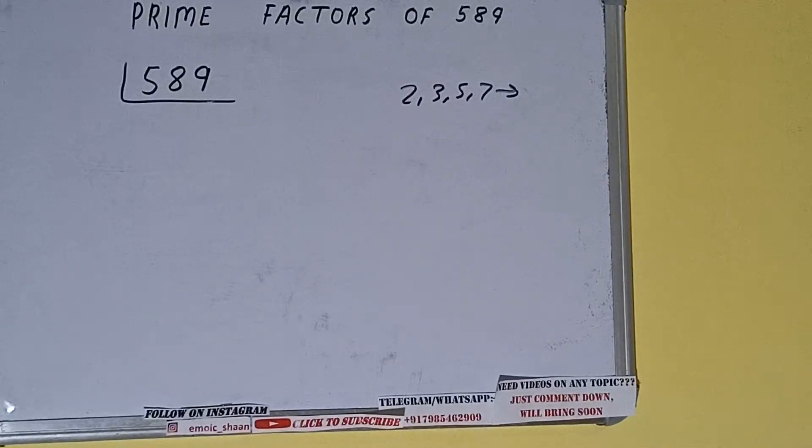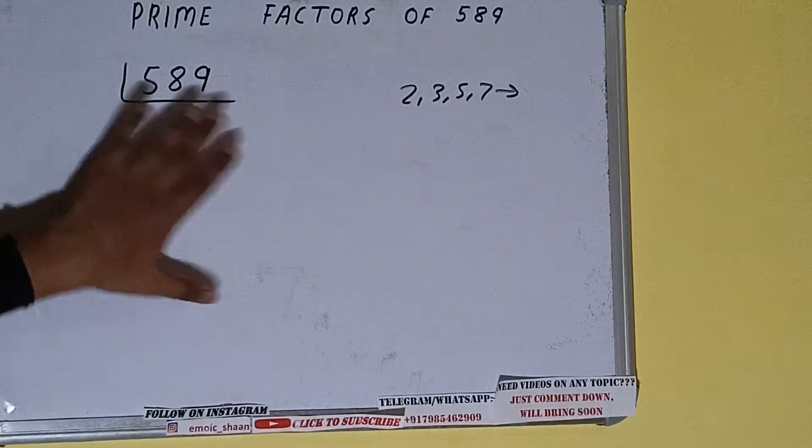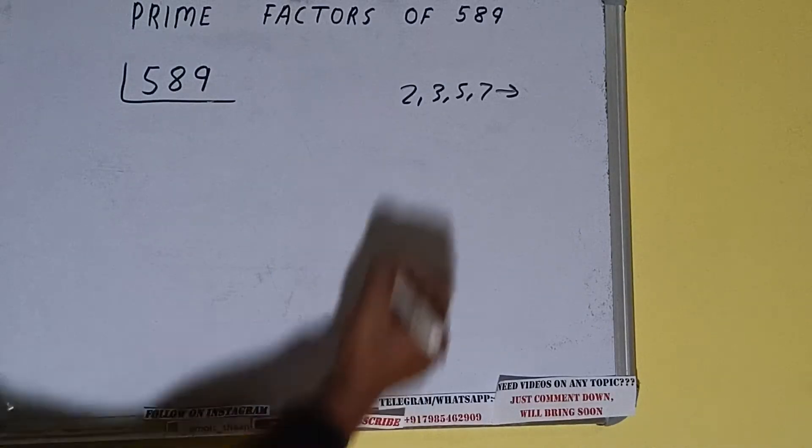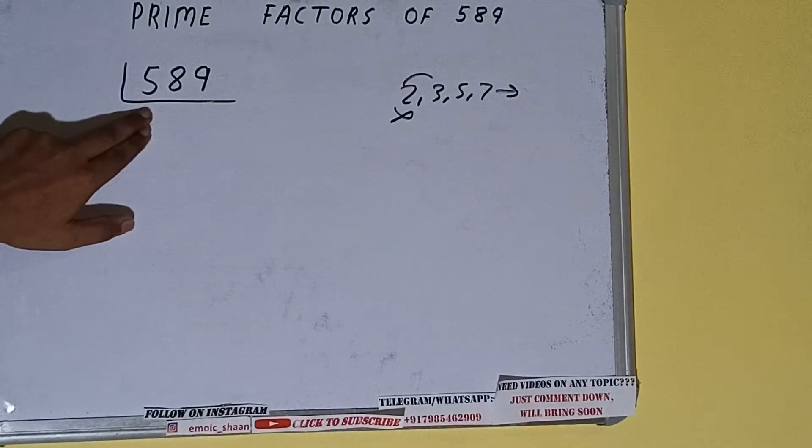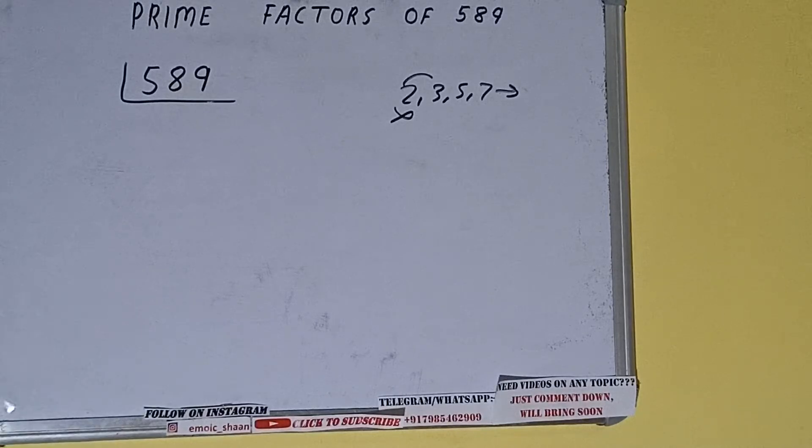That is 2. Is it divisible by 2? No, it is not, because the number is odd. So we'll be checking with the next lowest prime number, that is 3. Is it divisible by 3? Let's check. 3 ones are 3, 2, 8, 3, 9, 7, 1, 9. No, it is not divisible by 3 also.